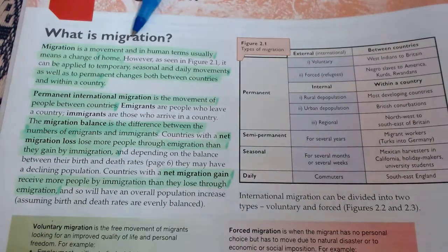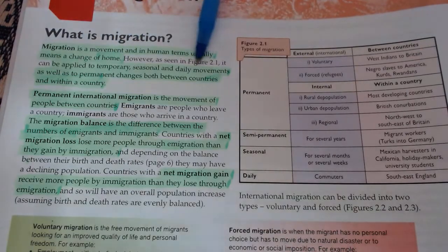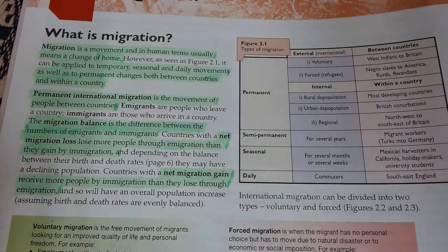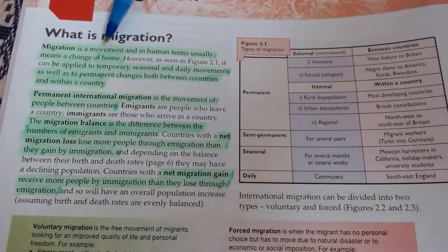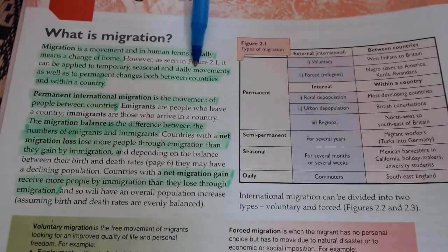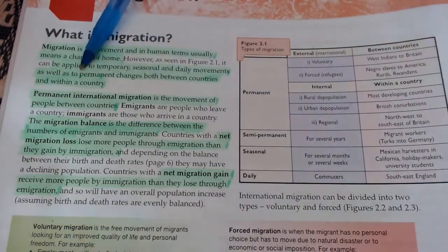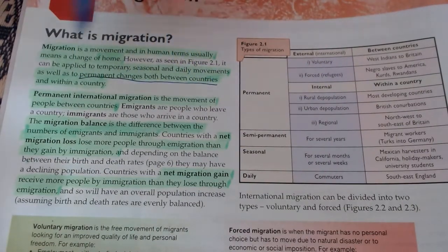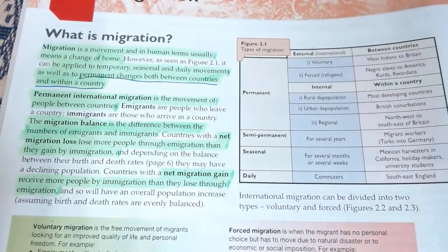Migration is the movement of people — in human terms it usually means a change of home or location. Obviously animals migrate too, but focusing on people: migration is the movement of people and a change of home. It can be temporary, seasonal, you can even have daily movements, as well as permanent changes — both between countries and within a country.